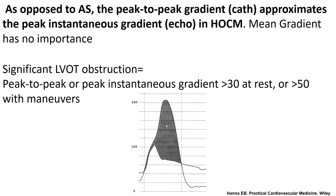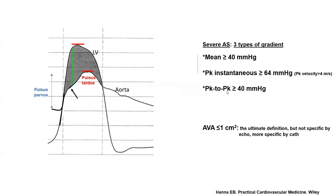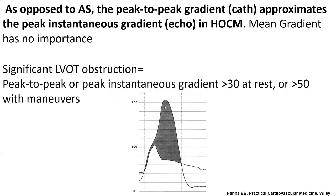If you do mean gradient in HOCM, you will be integrating that early systolic area between LV and aorta — a narrow band with zero gradient — making the gradient look much less than it is. So mean gradient has no value in HOCM. We use peak-instantaneous gradient by echo and peak-to-peak gradient by cath, and luckily those are almost equal to each other in HOCM. Peak-to-peak also approximates mean gradient in AS — not peak-instantaneous. In the cath lab, peak-to-peak gradient, the easy eyeball gradient, approximates the most important gradient in both AS and HOCM.